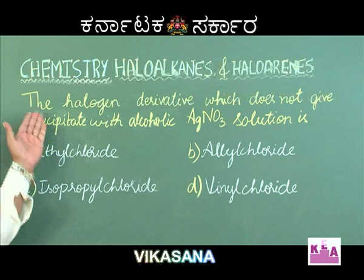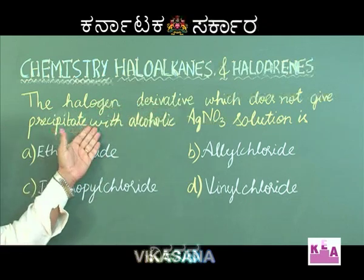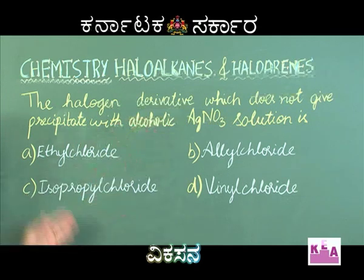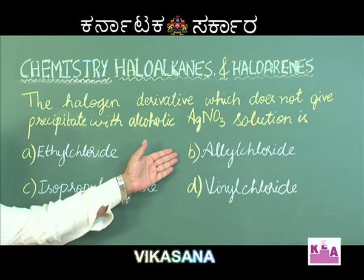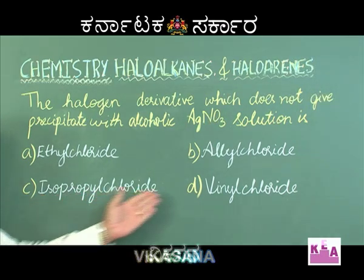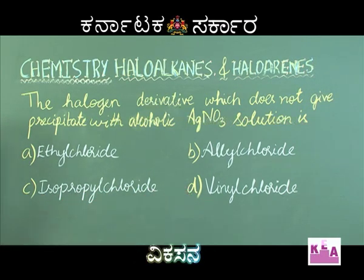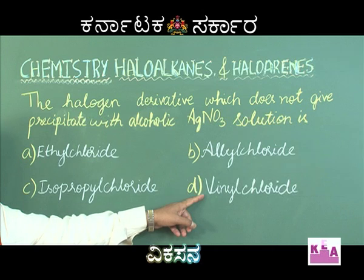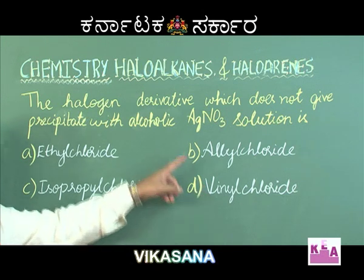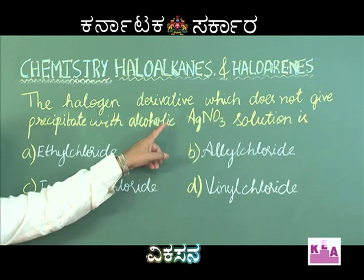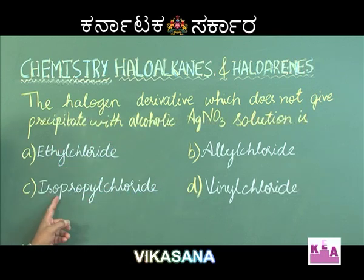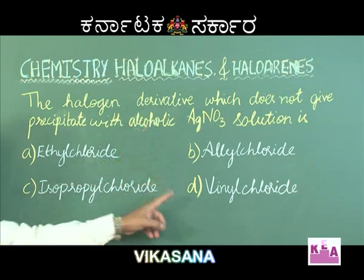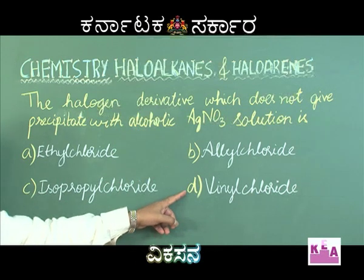The next question: which halogen derivative does not give a precipitate with alcoholic silver nitrate solution? Option A: ethyl chloride; option B: allyl chloride; option C: isopropyl chloride; option D: vinyl chloride. Vinyl chloride, being a vinylic halide, has the least reactive halogen atom. Therefore, it does not give a precipitate with alcoholic silver nitrate, while the halogen atoms in the other three options are highly reactive and do give precipitates. The correct option is option D: vinyl chloride.